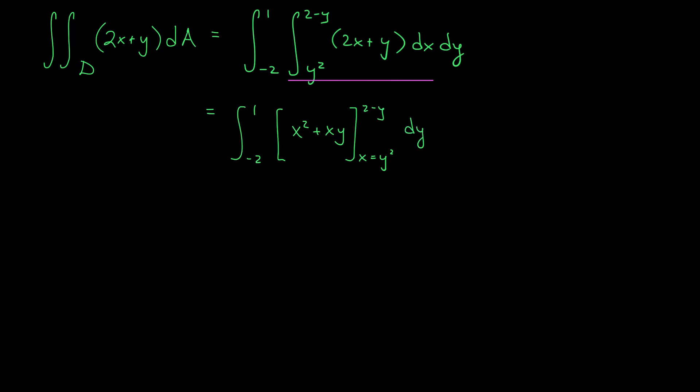Okay, we're going to plug in these bounds and see what we get. We have the integral from minus 2 to 1. And okay, this is going to look a little bit ugly, but we plug in the upper bound to get 2 minus y squared plus 2 minus y times y. And now we subtract off what we get by plugging in the lower bound. So minus y squared squared plus y squared y dy.